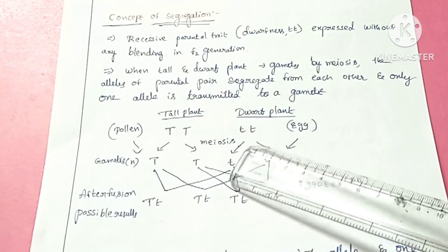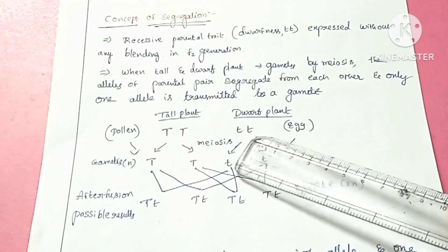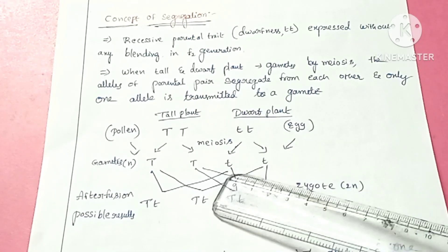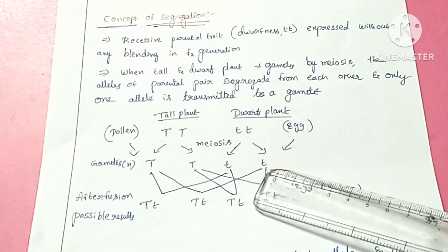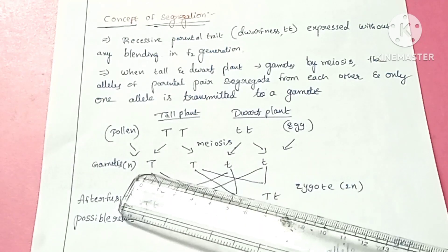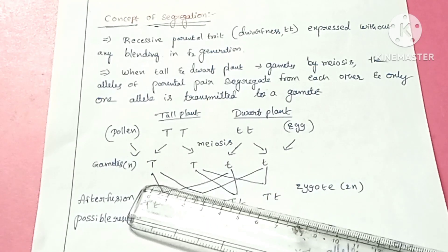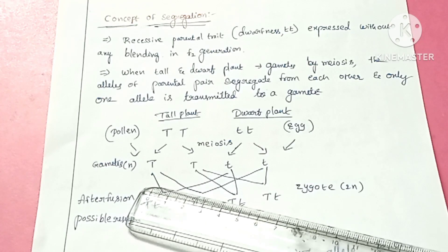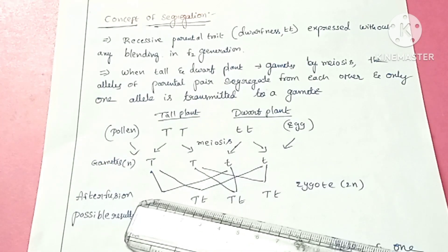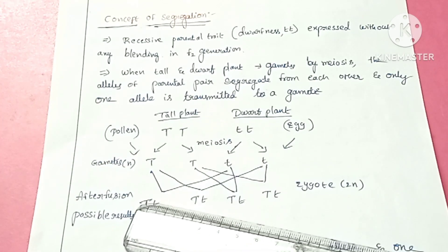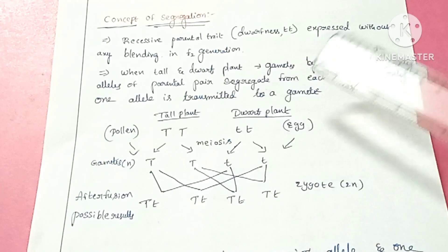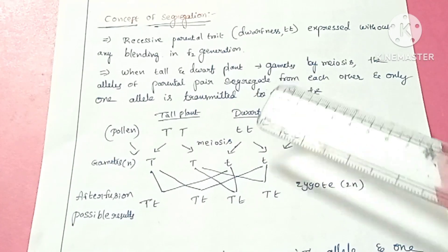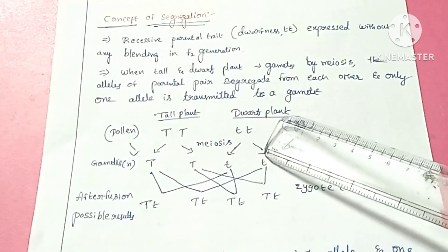The alleles of the dwarf parental trait, small d small d, also segregate and only one allele is transmitted to the gamete. These gametes carry one allele of each type, and hence only one factor of the character will be passed on. The gametes of the tall TT plant have allele capital T, and the gametes of the dwarf small d small d plants have the allele small d.